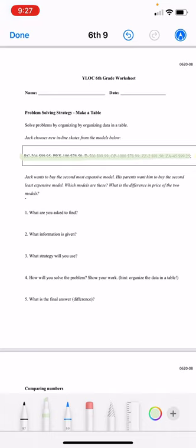Okay, so Jack wants to buy the second most expensive model. But his parents wanted to buy the second least expensive model. Okay, so most and least. Which models are these? What is the difference in price of the two models?